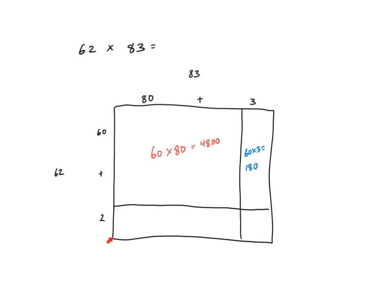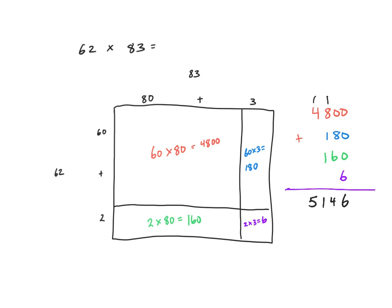The one directly below the red one is a 2 on the side by 80 across — a 2 by 80 rectangle, which has an area of 160 square units. And our last box is 2 on the side by 3 along the top, so it's a 2 by 3, which has an area of 6 square units. Adding up all of these partial products: 4,800 plus 180 plus 160 plus 6, I get a total product — 62 times 83 is equal to 5,146.